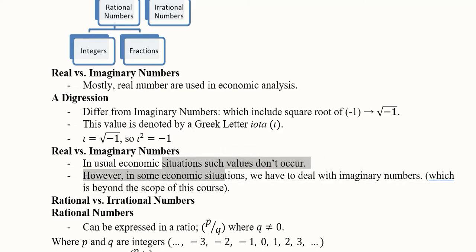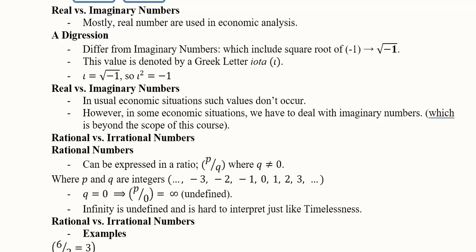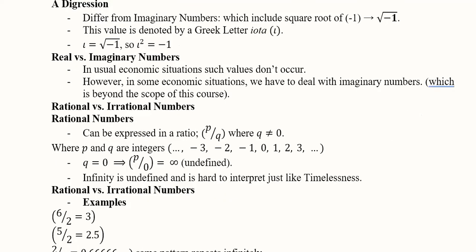After this we come back to real number analysis because imaginary numbers are beyond the scope of our course. We shift towards rational and irrational numbers. Rational numbers are expressed in the form of a ratio, where p over q is the standard form. Q should not be equal to 0 because if q is 0, the result will be undefined.